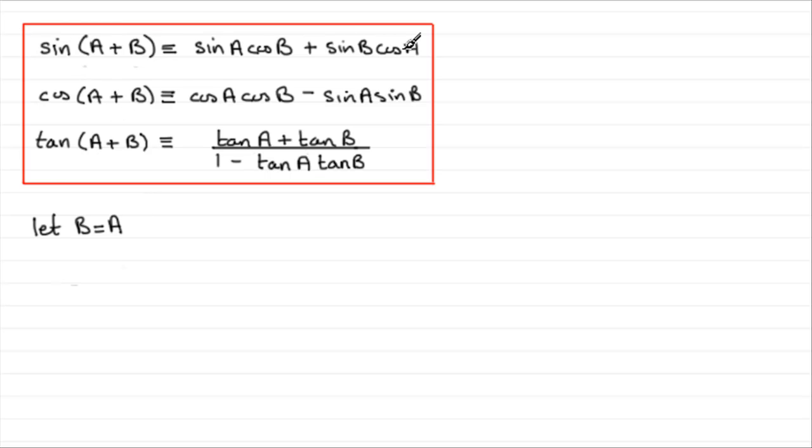So for this first identity, the sine of A plus B is identical to sine A cos B plus sine B cos A. For this identity, if we let B equal A, what we end up with is sine of A plus another A, because the B stands for an A. A plus A is 2A. So we get sine of 2A, what is called a double angle.